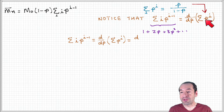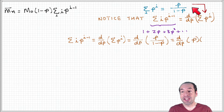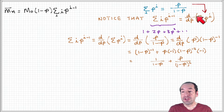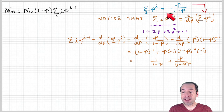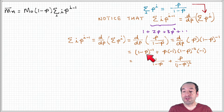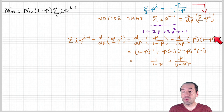Since we know the summation of p to the i equals p over one minus p, we can express the summation of i times p to the i minus one as the derivative of p over one minus p. Using the product rule: the derivative of the first term holding the second constant gives one over one minus p, plus p times the derivative of one minus p to the minus one, which gives minus one times one minus p to the minus two times minus one.